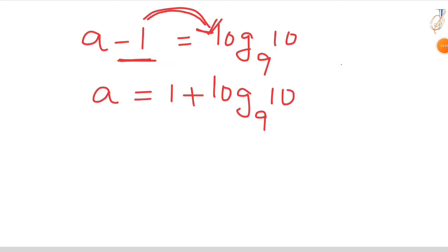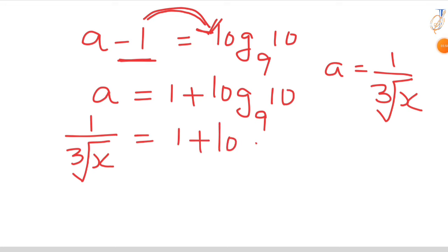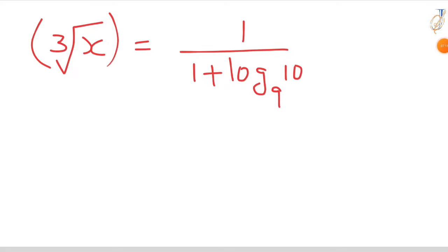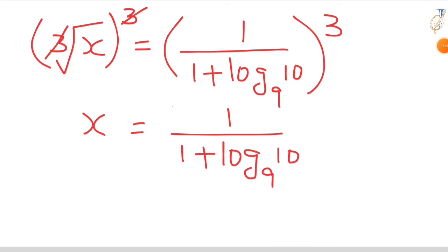We consider a equal to 1 by cube root of x. So 1 by cube root of x that is equal to 1 plus log 10 base 9. Cube root of x is 1 by 1 plus log 10 base 9. If you do cube root of x that is equal to 1 by 1 plus log 10 base 9 whole cube.